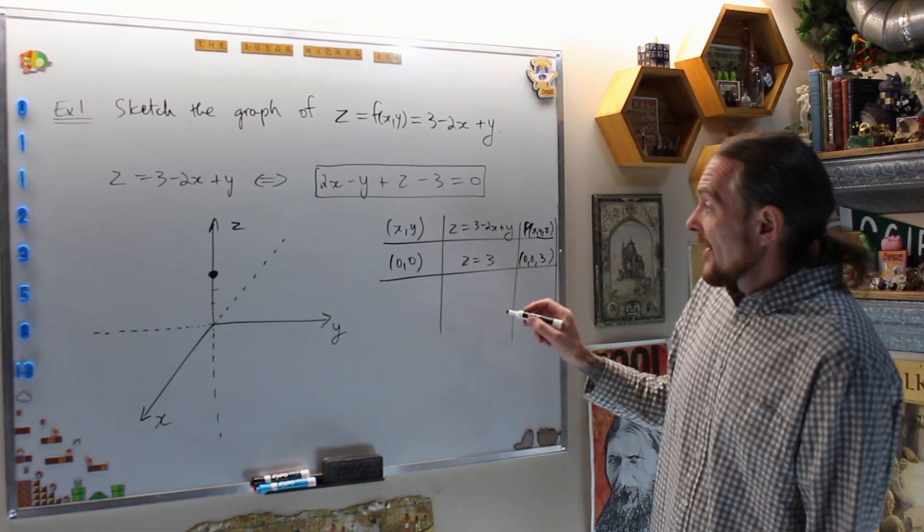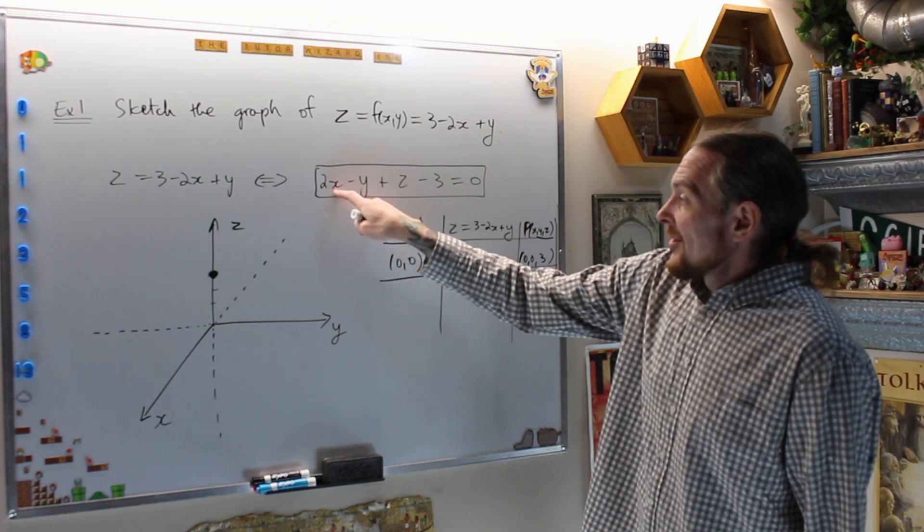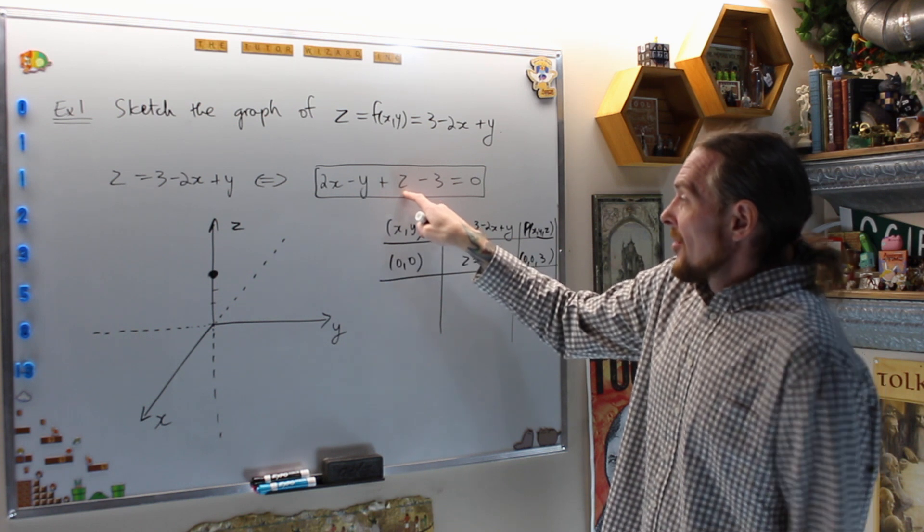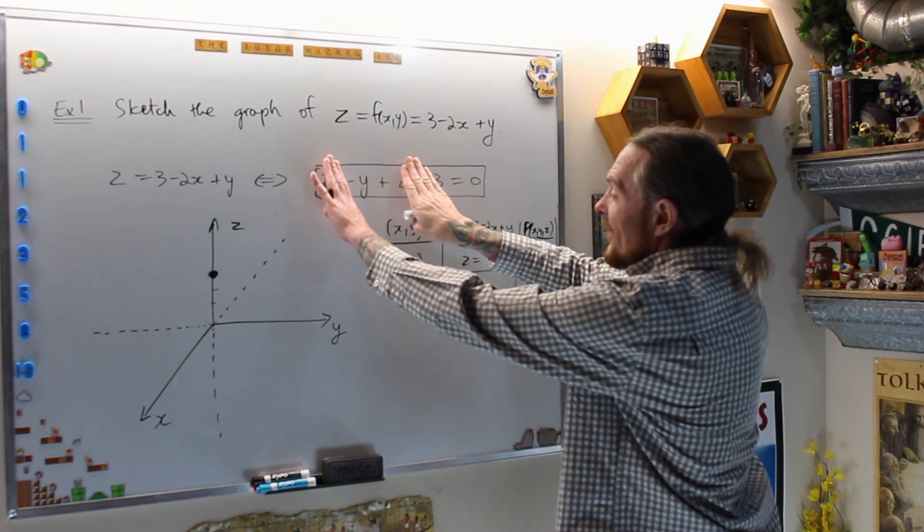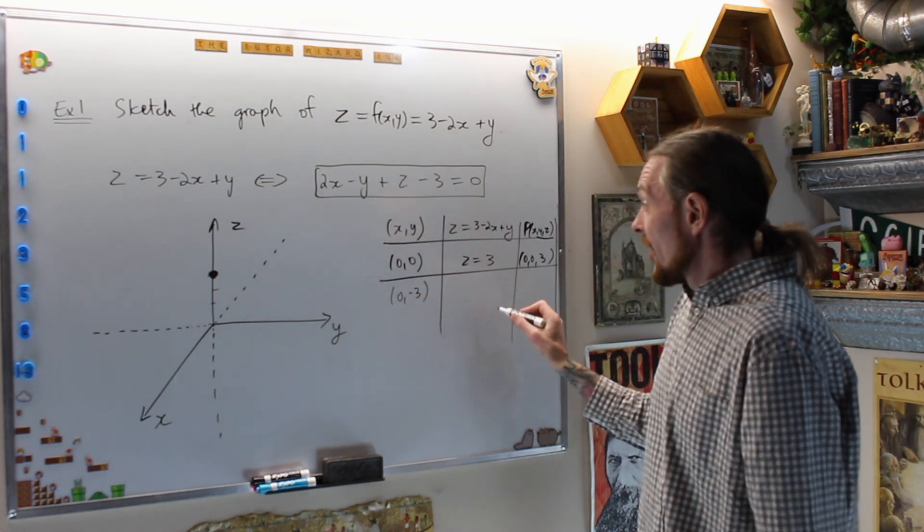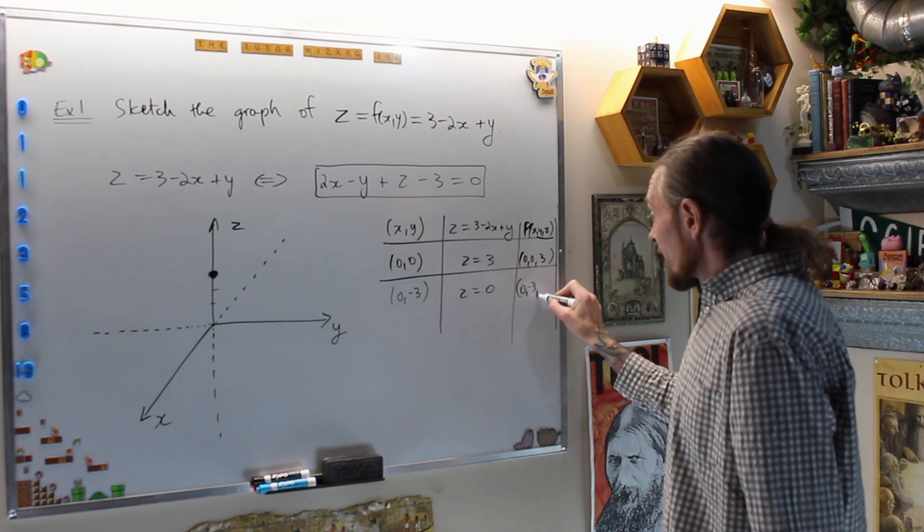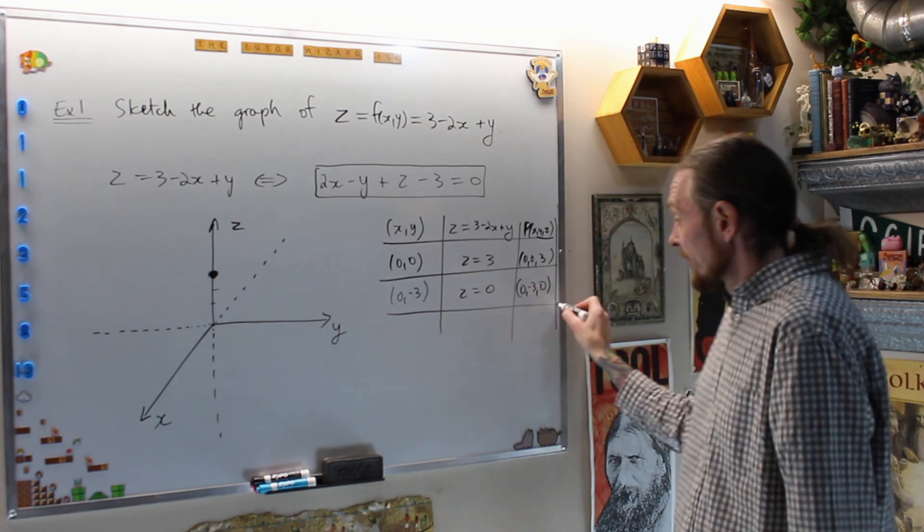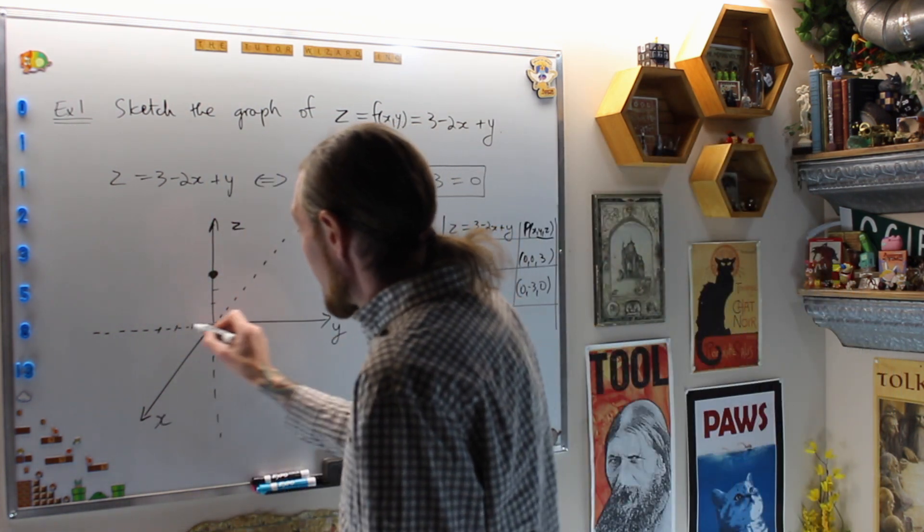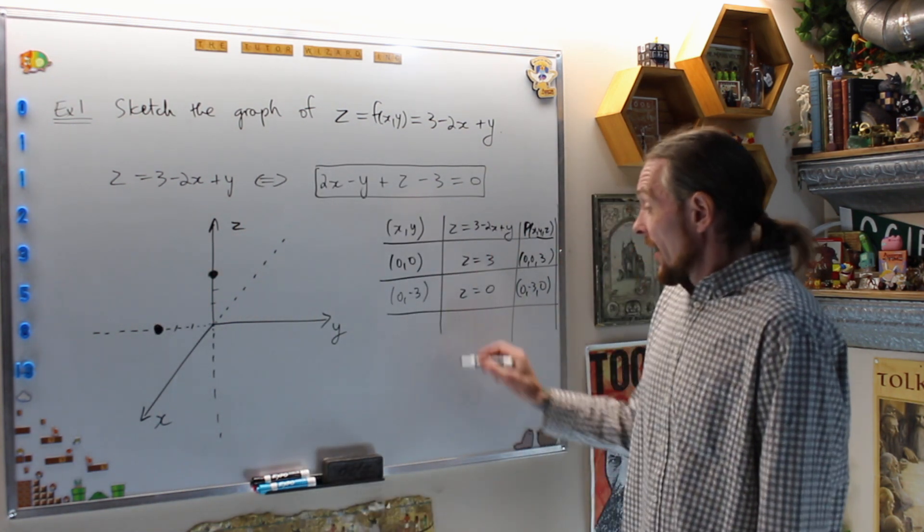Let's pick another point. Let's pick when x and z cleverly are zero. When x is zero and z is zero, that gives me what? When x is zero and z is zero, that gives me y is negative 3. So at (0,-3), cleverly we're going to get z is 0. So that gives me the point (0,-3,0). That gives me 1, 2, 3. When x and z are zero, y is negative 3.